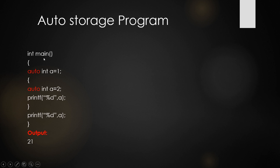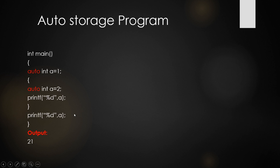Here is an example program for auto storage class. In main, I declare auto int a equal to 1. Inside an inner scope, I declare another auto int a equal to 2 and print it — it prints 2. While coming out of that scope, the inner variable a is destroyed. After the scope, printing a again gives 1, since auto int a equal to 1 belongs to the outer scope. That is the main use of auto storage class.